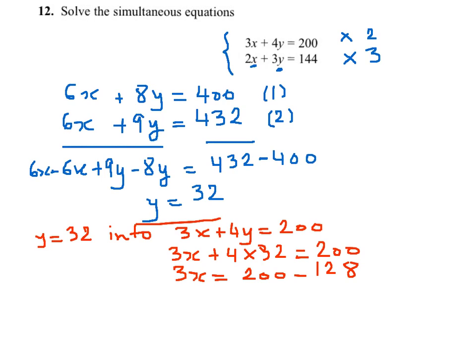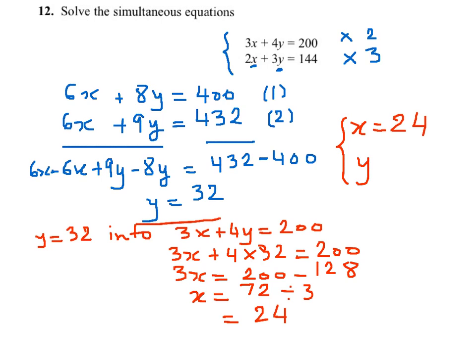So the value of x will be 200 take away 128, which is 72, divided by 3. So my answers are x equals 24, since 72 divided by 3 is 24, and y equals 32.